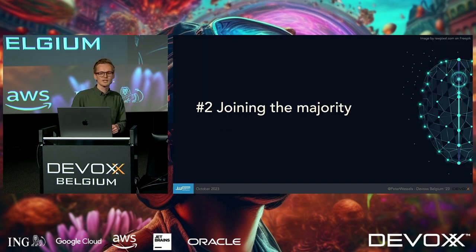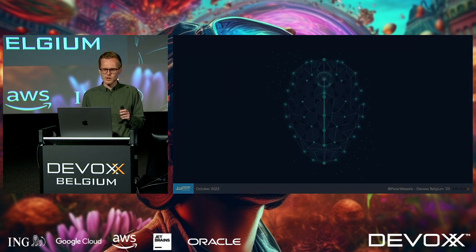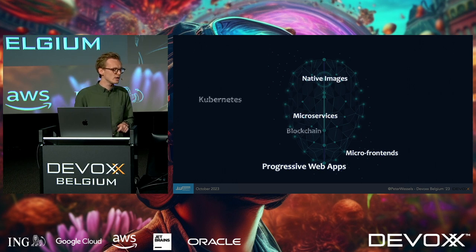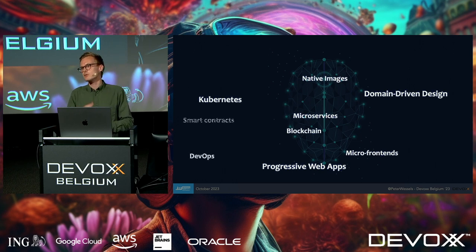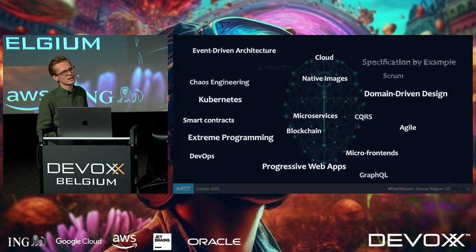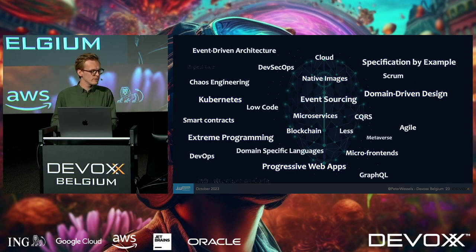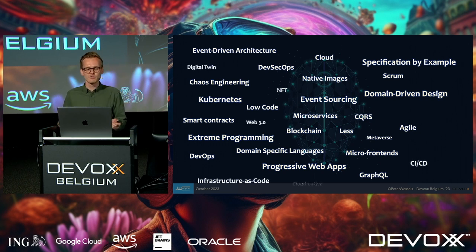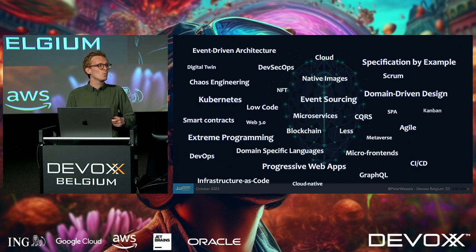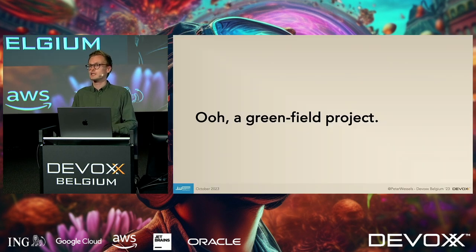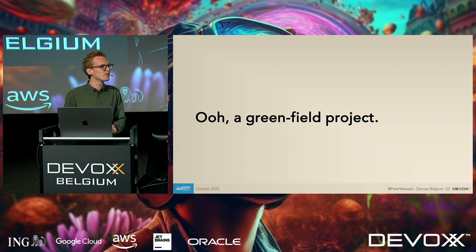Next: joining the majority. If you look at conferences today, you see hyperlingo everywhere — cloud native, event sourcing, domain-driven design. I had the chance to do a greenfield project a few years ago and thought, I go to conferences a lot, so now I can use all those technologies in this single project.